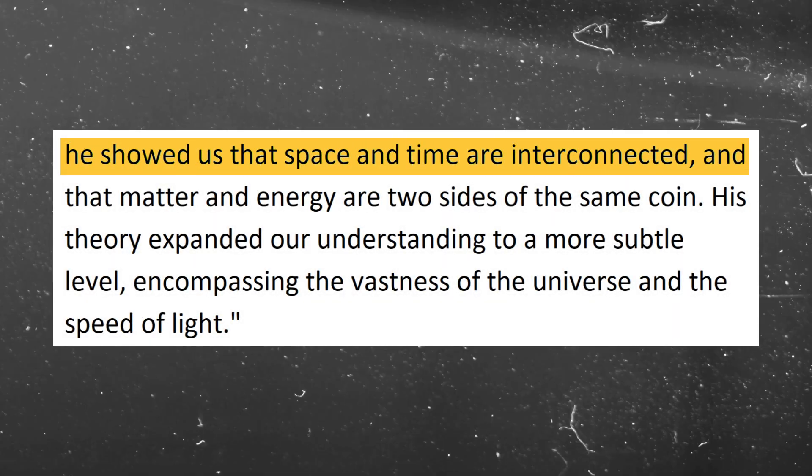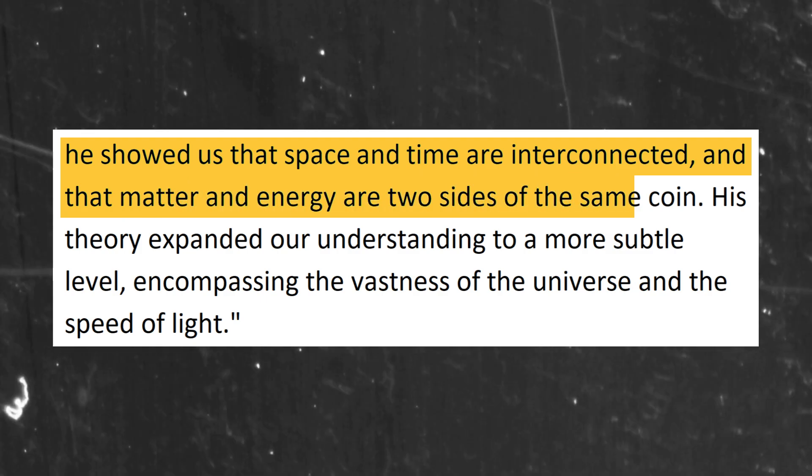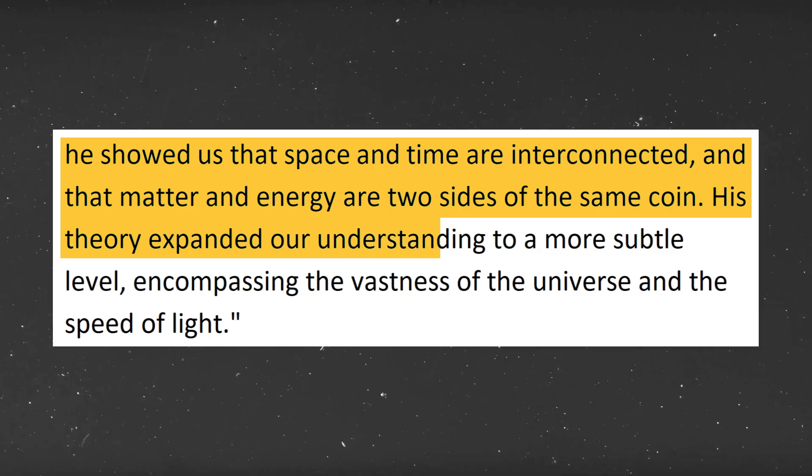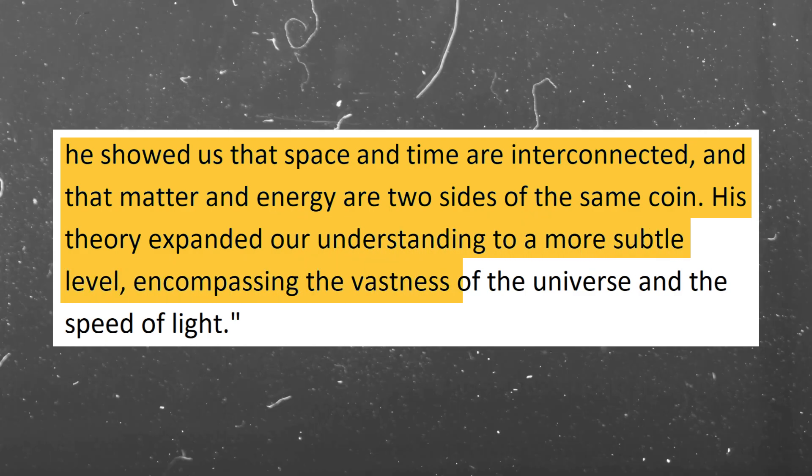At level 2, which is a little more subtle, this is where Einstein comes in and gives us the theory of relativity. He explains how matter and energy are one and the same. Einstein explained the deeper, subtler aspect of reality. His theories explain a different level compared to Newton — he showed us that space and time are interconnected, and that matter and energy are two sides of the same coin. His theories expanded our understanding to a more subtle level, encompassing the vastness of the universe and the speed of light.